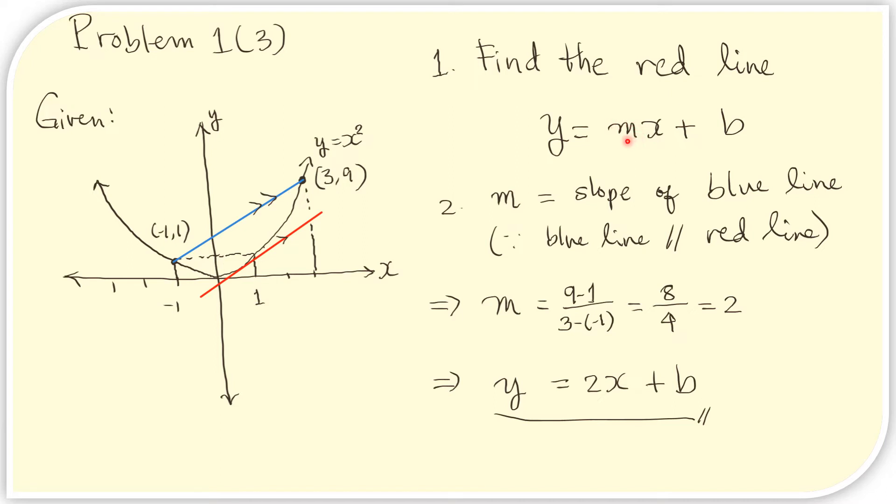m is the slope, and we know that the red line is parallel to the blue line, and therefore their slopes must be the same. We can find the slope of the blue line. Therefore, we can also find the slope of the red line. So let us find the slope of the blue line.